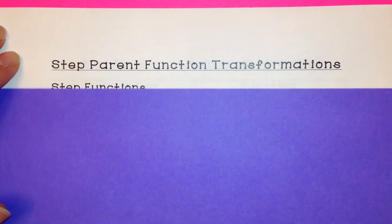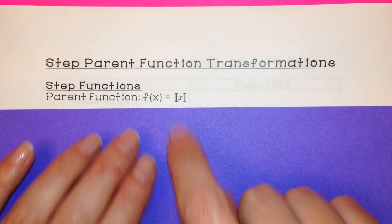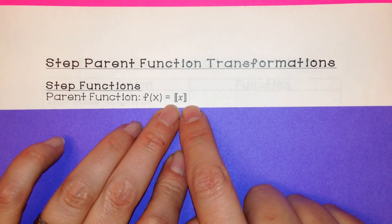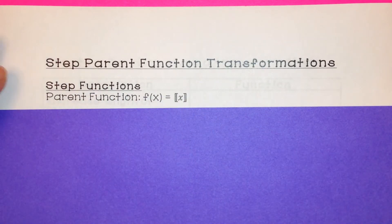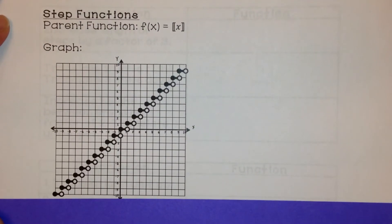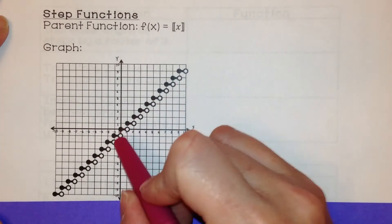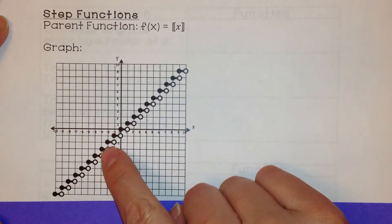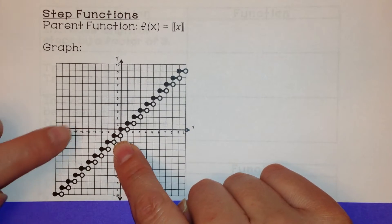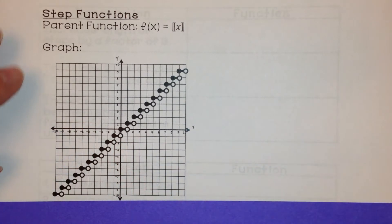This video is on transformations of step functions, and we're going to look at the parent function. The parent function of a step function is f(x) equals the greatest integer of x, where the little brackets represent greatest integer. The graph is a step function with a stair-step pattern. You do have one side where it's a closed circle, the other side's open. Closed means it does include the point; open means it does not.